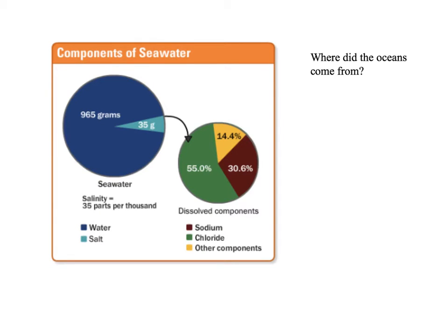Let's explore the components of seawater. In this first pie chart, what we'll notice is if we take a thousand grams, a kilogram of seawater, 35 grams is going to be not water. The other 965 grams are going to be water. So that gives us a total of 35 parts per thousand, which is what we register salinity as being.